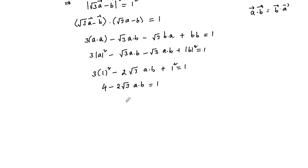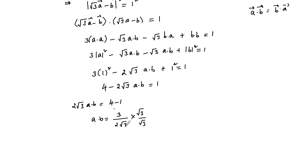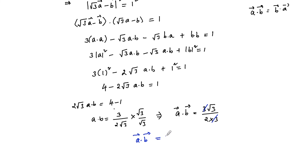Solving for a·b: a·b = (4 - 1) / (2√3) = 3 / (2√3). Rationalizing the denominator by multiplying and dividing by √3, we get a·b = (3√3) / (2 × 3). Cancelling 3 and 3, a·b = √3/2.